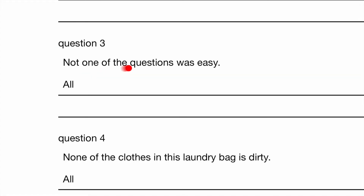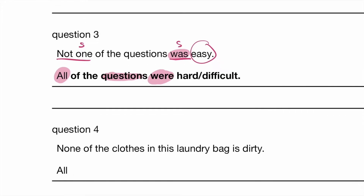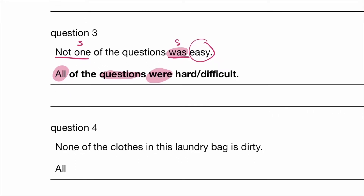Question 3: Not one of the questions was easy. 'Not one' is singular, therefore 'was' is singular as well, and it's in the past tense. Saying 'not one was easy' is the same as saying 'all difficult.' The opposite of easy is difficult. The question is: do we use a singular or plural verb? The answer is plural — because 'all' is plural when dealing with countable nouns. Keep it in the past tense. Do not use 'are' — follow what was used in the question: past tense. So you can say: all of the questions were hard, or all of the questions were difficult.